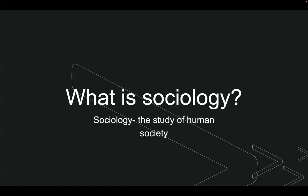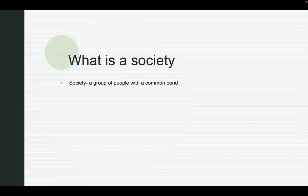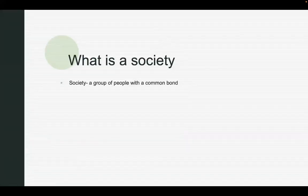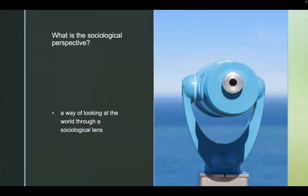And then I say, what's a society? And you say, a group of people with something in common or a common bond. And then, what's the purpose of the theories? To be able to explain society. So what's a sociological perspective? It's this way of looking at the world through a sociological lens. And when we think about sociological theories, really we're looking at paradigms, these lenses by which we can view society.